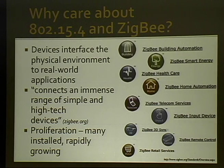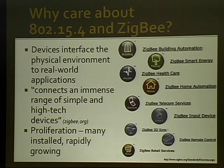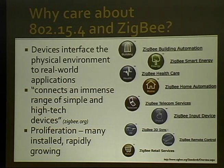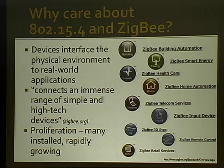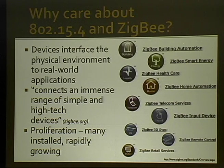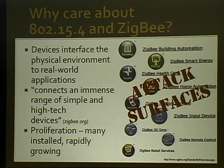Why do we care about 802.15.4 and ZigBee? These are devices that are interacting with the physical environment deployed in real-world applications. The ZigBee Alliance wants to connect a max range of simple and high-tech devices, and they're doing quite well at proliferating this technology. On the right are the different fields it's being deployed in: building automation with HVAC systems, process automation, smart energy with power meters, healthcare monitoring, home automation controlling theaters, lighting, sprinklers, and security systems. What we might call these are really attack surfaces.